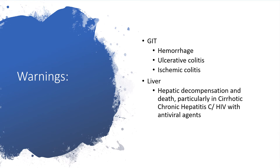In the gastrointestinal tract, there is a likelihood of hemorrhage. We already know there will be thrombocytopenia. There is also worsening or development of ulcerative colitis and ischemic colitis. It will worsen autoimmune conditions. When it comes to the liver, hepatic decompensation and death could occur, particularly in liver cirrhosis, chronic hepatitis C, or HIV patients on antiviral agents.